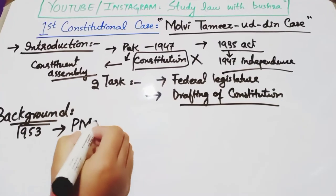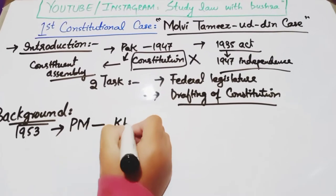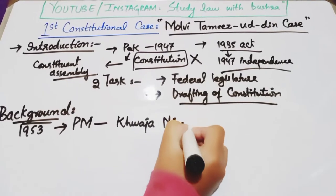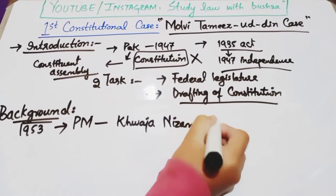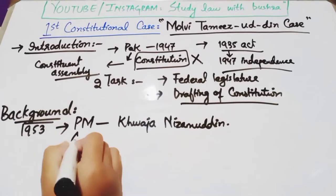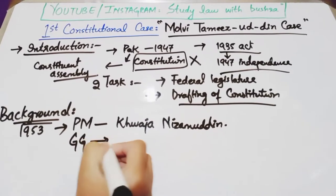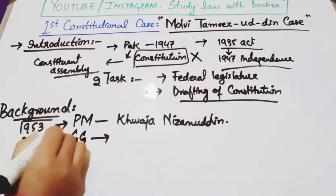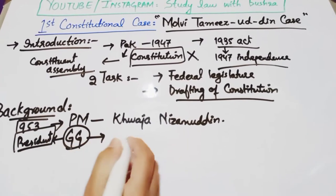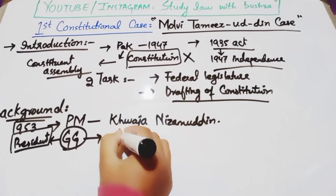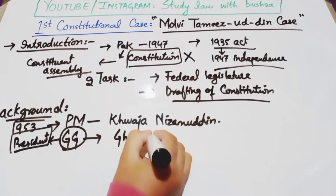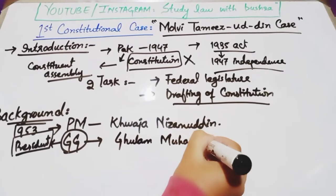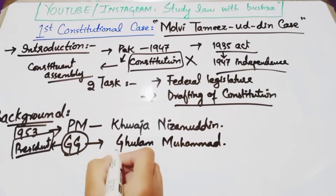1953 میں جو country کے prime minister تھے وہ تھے خواجہ نظام الدین، اور اس وقت کے governor general — یعنی کہ آج کی زبان میں president — وہ تھے ملک غلام محمد۔ یہ تھے اس وقت country کے president۔